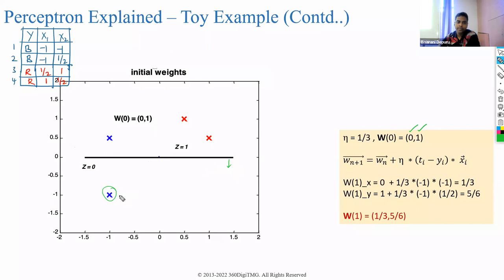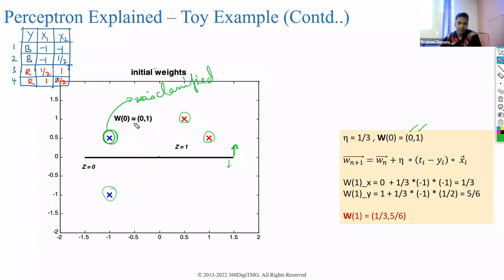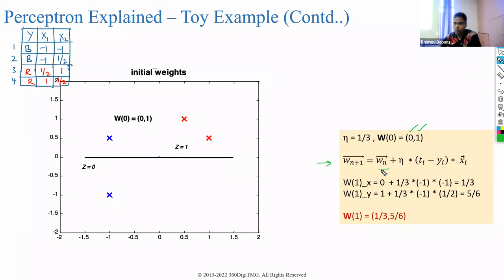A point that falls above the classifier line would be predicted as red, but it is actually blue — so it is misclassified. This gives us an error. Whenever you have loss or error, you backpropagate and update the weights. The formula is: new weights = old weights + eta × error × input.